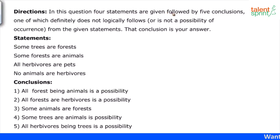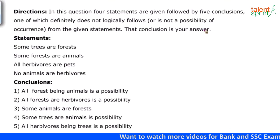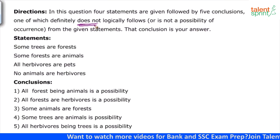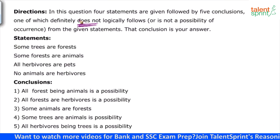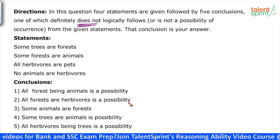In this question, four statements are given followed by five conclusions, one of which definitely does not logically follow or is not a possibility of occurrence from the given statements. That conclusion is your answer. What you need to remember is the one that does not logically follow — the one that does not follow the given statements is the answer. We are not trying to find the right conclusion; our job is to find the wrong conclusion. Out of five, only one is wrong, so we have to identify which one.